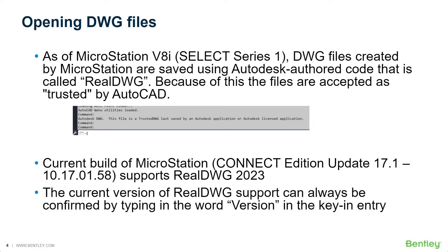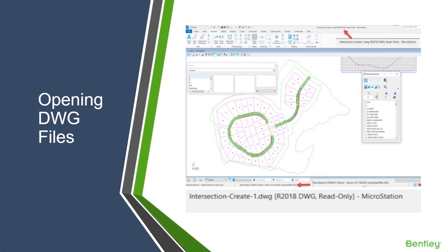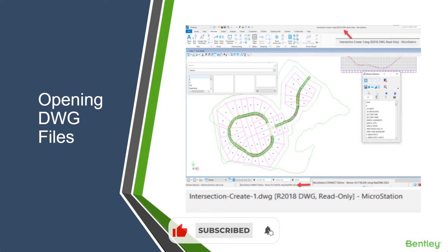The current build of MicroStation Connect Edition, update 17.1 or 10.1701.58, supports RealDWG 2023. The current version of RealDWG support can always be confirmed by typing the word 'version' in the key-in entry. As you can see on the next slide, we have a file open that is a version 2008 DWG file, but when I typed 'version,' you can see the version of RealDWG is 2023. This means RealDWG supports the most current DWG format, so you can open all files from AutoCAD 2023 and going back.